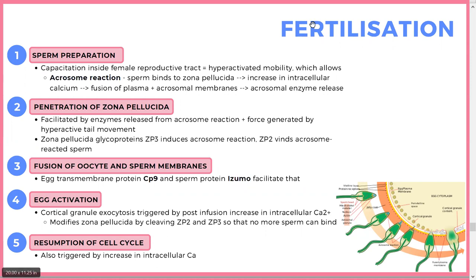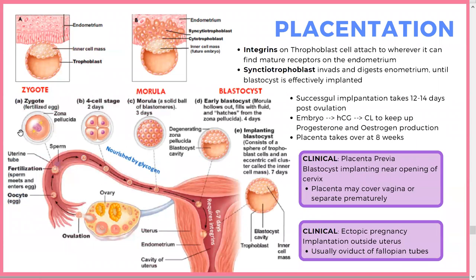At that point we have a zygote that goes through all the embryological stages. What causes the trophoblast to implant in the endometrium are integrins — these proteins make the trophoblast attach to the endometrium, and the syncytiotrophoblast invades and digests the endometrium. Successful implantation takes 12 to 14 days from fertilization.